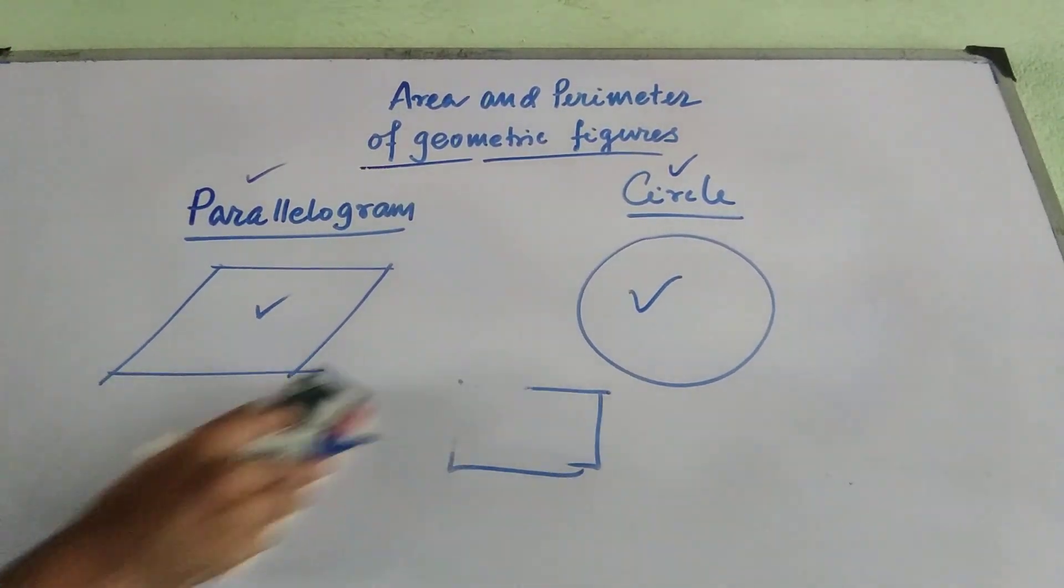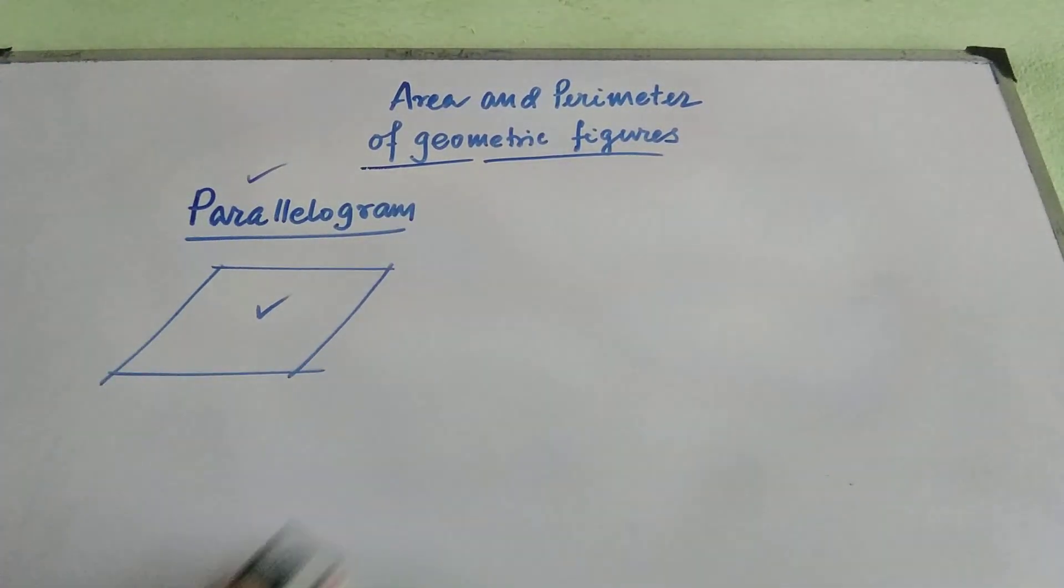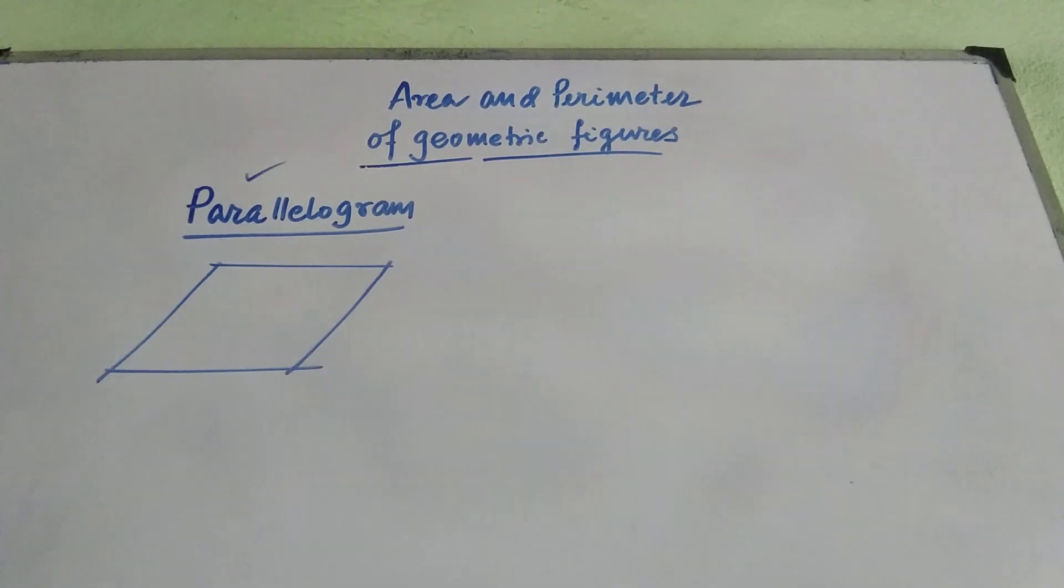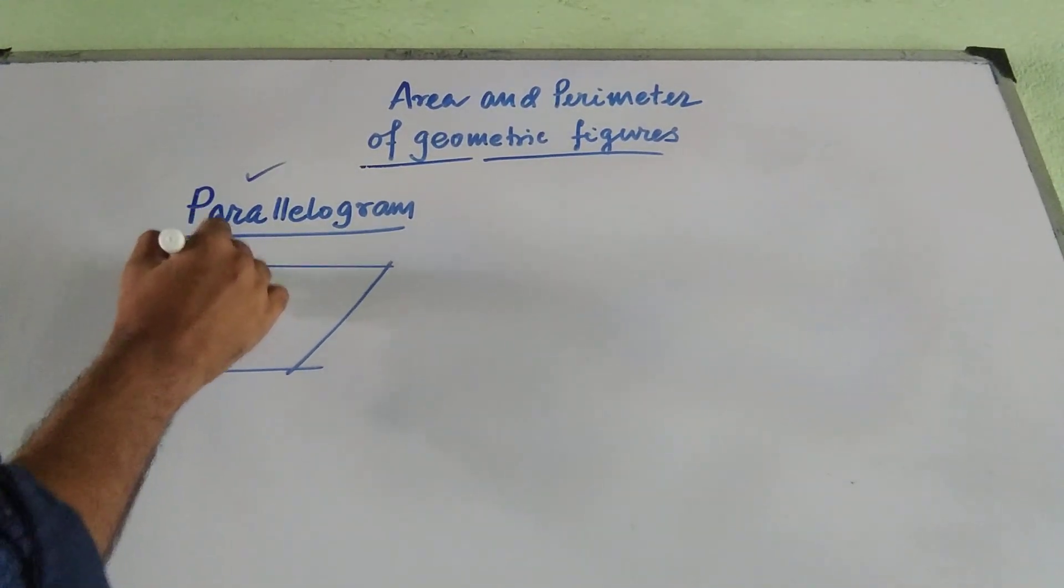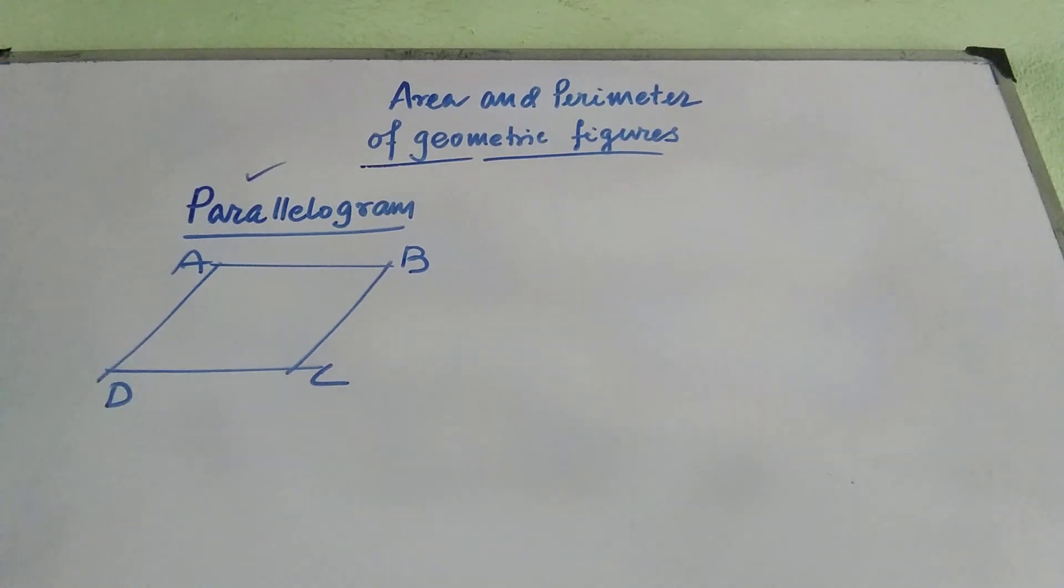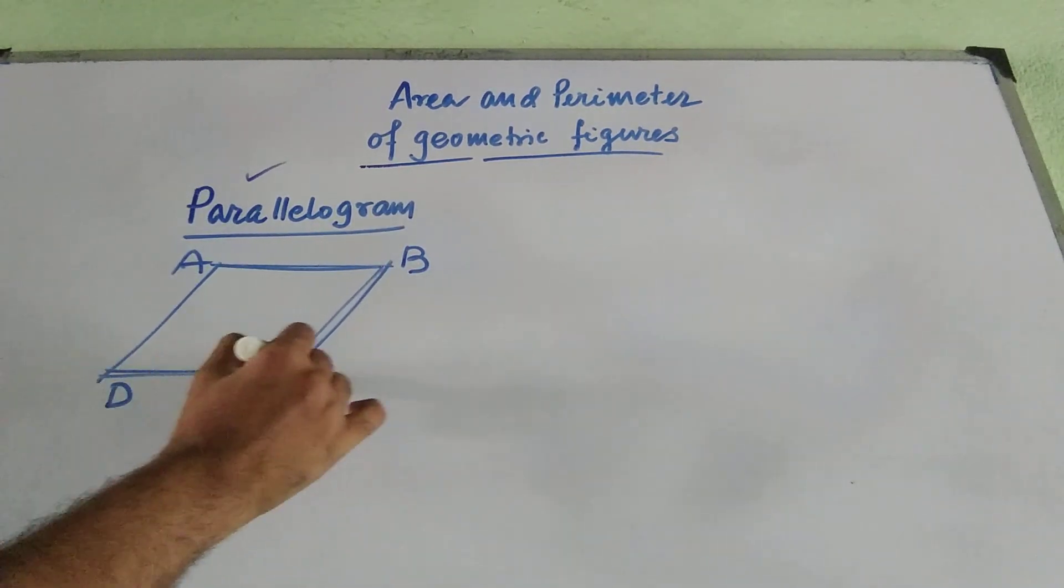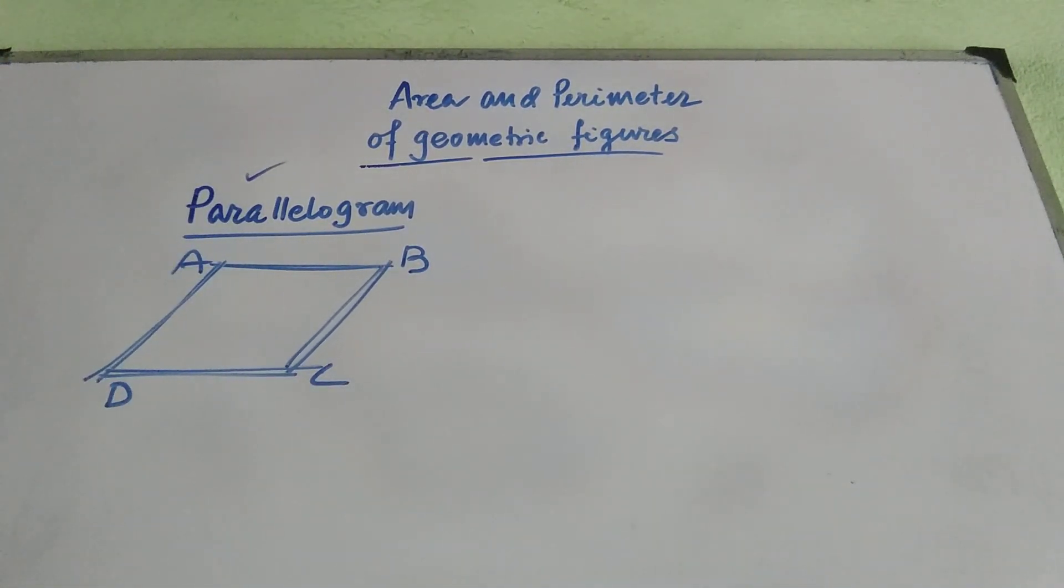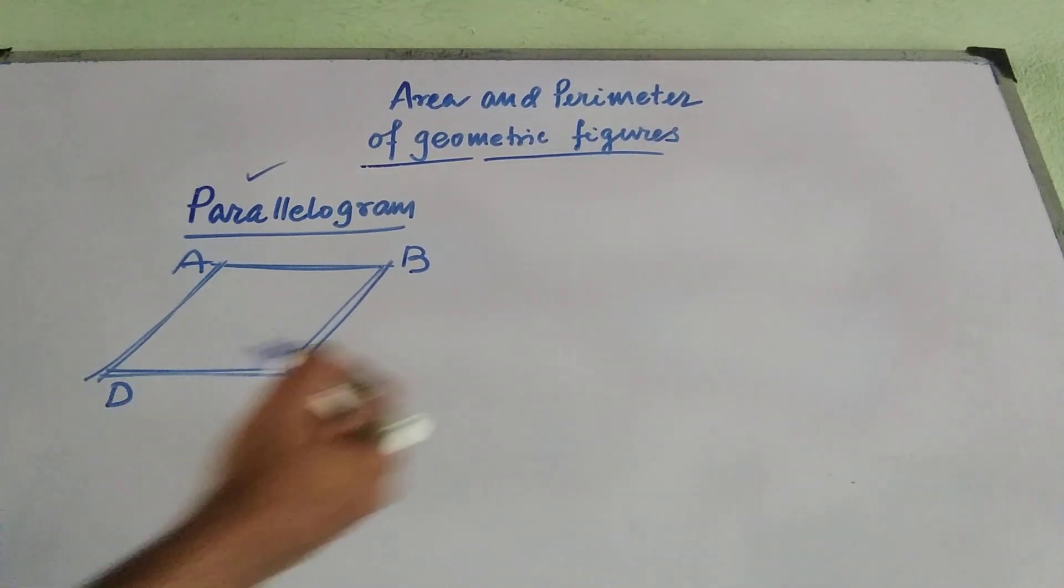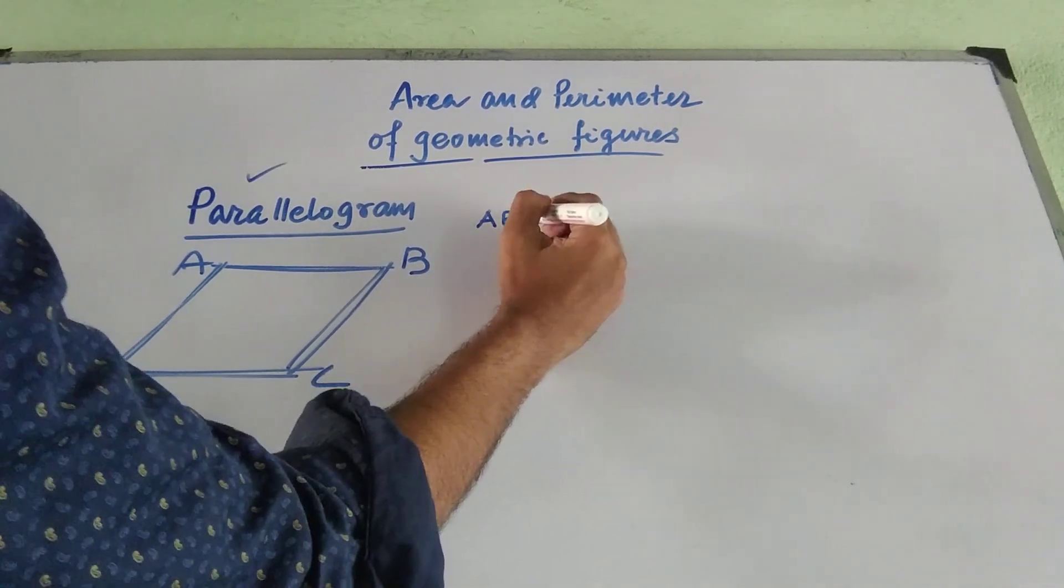First I am starting with the finding of area and perimeter of parallelogram. What is a parallelogram? Parallelogram is a quadrilateral. Quadrilateral is nothing but a geometric figure which is having four sides. A, B, C, D is my parallelogram here. But there is a definite characteristic of parallelogram. Two opposite sides are parallel and equal to each other.